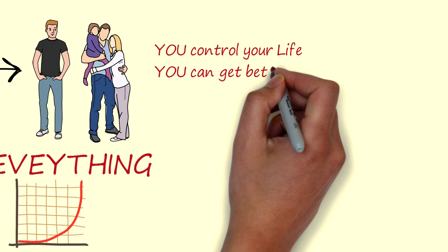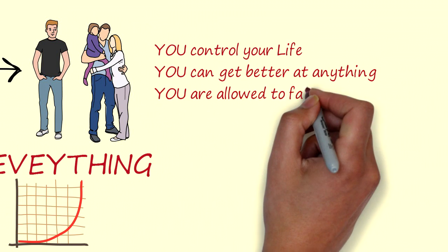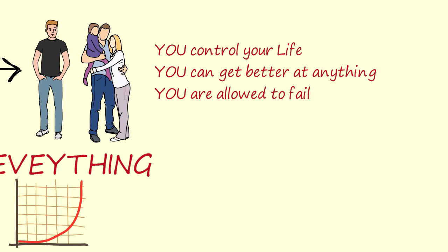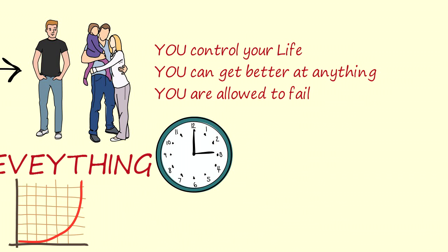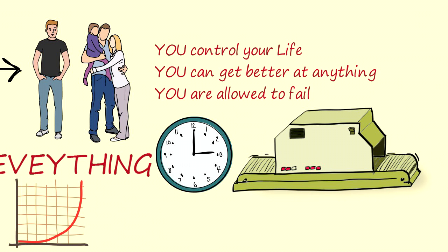You control your life, you can get better at anything, and you are allowed to fail. Getting rich slowly requires you to spend 71% of your days at work. Regardless of your view on money, your time is the greatest sacrifice in the getting rich slowly plan. Instead of spending your time working, you should spend your time to create systems that do the work for you, aka passive income.